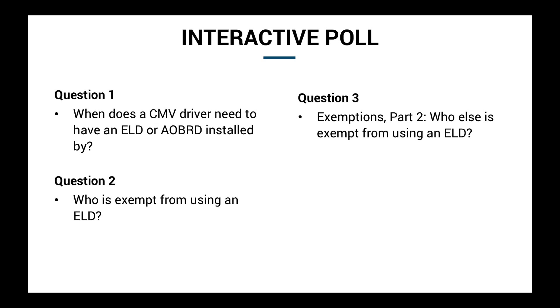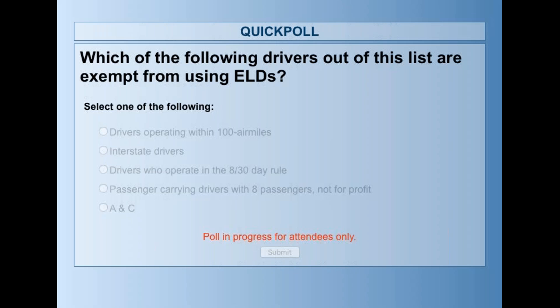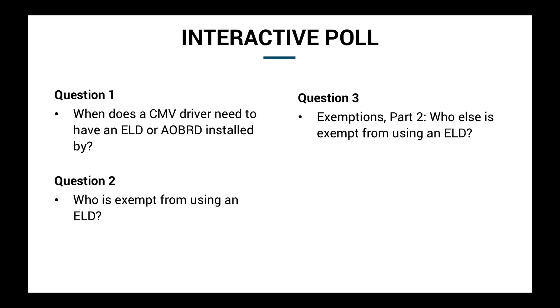The next question is also about exemptions: which of the following drivers are exempt from using an ELD? Is it drivers operating within a 100 air mile radius of their starting location, interstate drivers, drivers who operate in the 8 and 30 rule, or passenger carrying drivers with 8 passengers not-for-profit? Most of you got it right — it's A and C: people who qualify for the 8 and 30 exemption and the 100 air mile radius short-haul exemption.